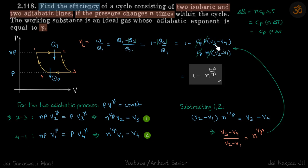So now we need the ratio of V3 minus V4 upon V2 minus V1. We are going to use these two adiabatic processes to get our ratio. Let's write the relation between pressure and volume because we know the ratio of pressures and we want the ratio of volumes.